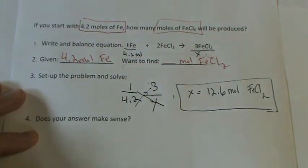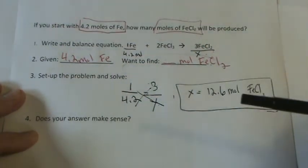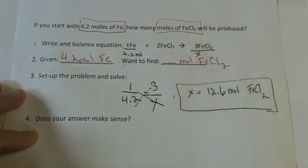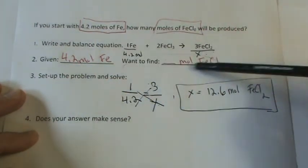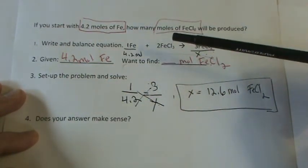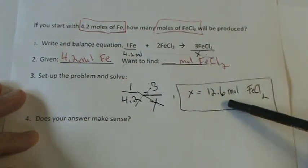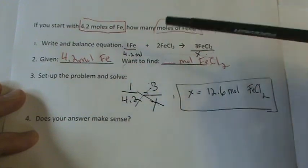So just to recap, we've got our balanced equation. We're going to write down what we're given, what we're looking for, and then we can actually just set it up right in this equation, this balanced equation. Set our ratio up, cross multiply, and make sure we end up with the right units. Check if it makes sense, and we're done.